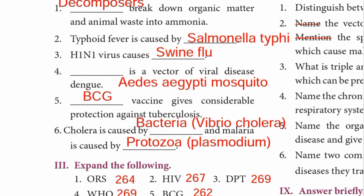Third one — H1N1 virus causes swine flu. Number four — blank is a vector of viral disease dengue. The answer is Aedes aegypti mosquito.